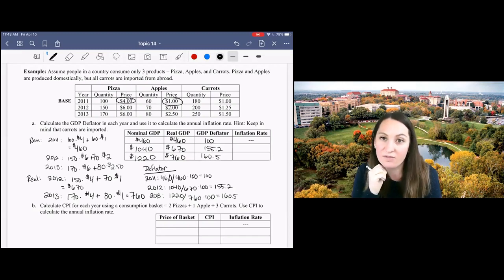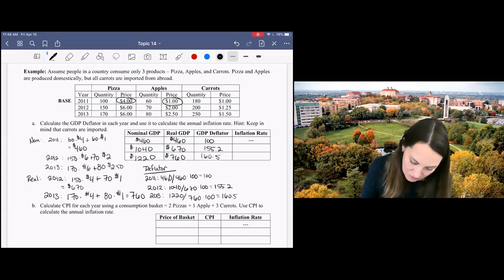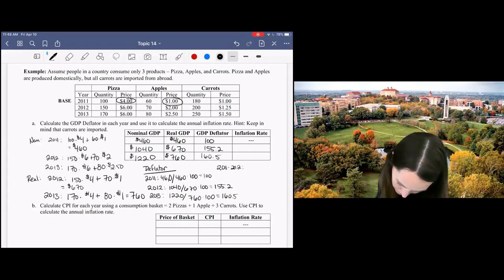Final step is to calculate the inflation rate. That's the rate of change, or the percent change, in our GDP deflator, which is the price index we're using in this calculation. So for inflation from 2011 to 2012, we've got new minus old over old, and that's going to give me 55.2% inflation.